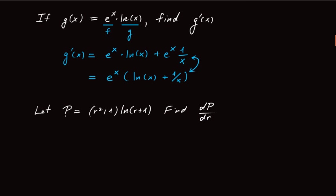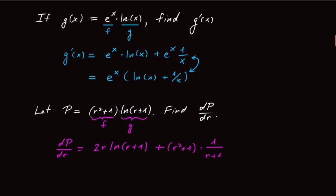Finally, let's look at p equals r squared plus 1 times ln of r plus 1, and we want to find dp/dr. My first function f is r squared plus 1, and my second function g is ln of r plus 1. So dp/dr equals the derivative of the first function — that's 2r — times the second function, ln of r plus 1. Then I add the original function f, r squared plus 1 without differentiating it, times the derivative of ln of r plus 1. The derivative of ln of r plus 1 is 1 over r plus 1, and by the chain rule, times the derivative of the inside — the derivative of r plus 1 is just 1, so I don't get anything new. This is an example of using the product rule to find derivatives of products.